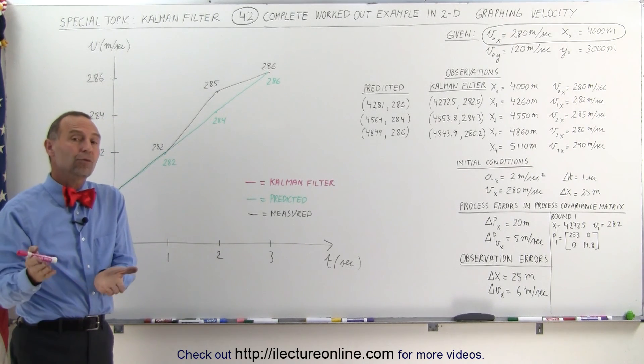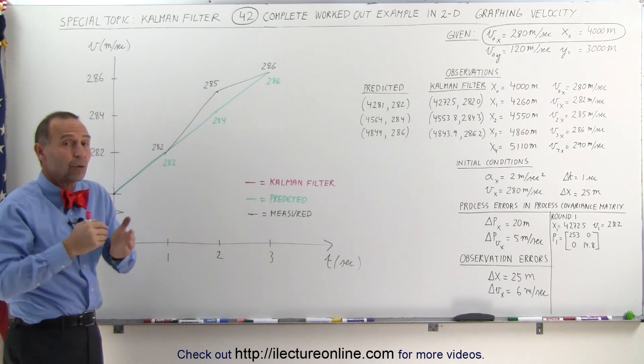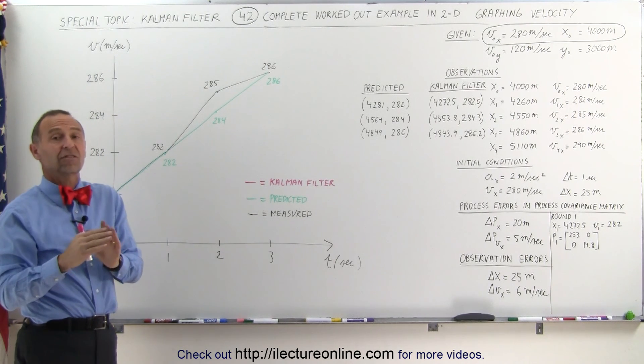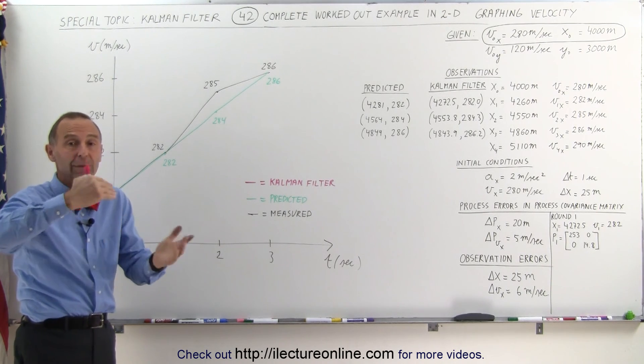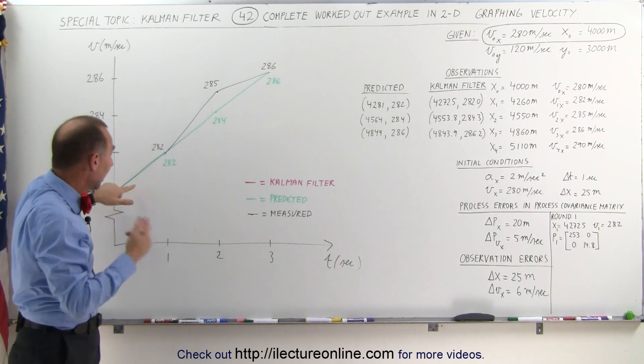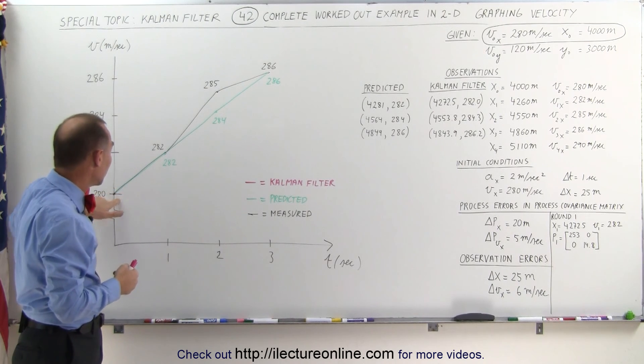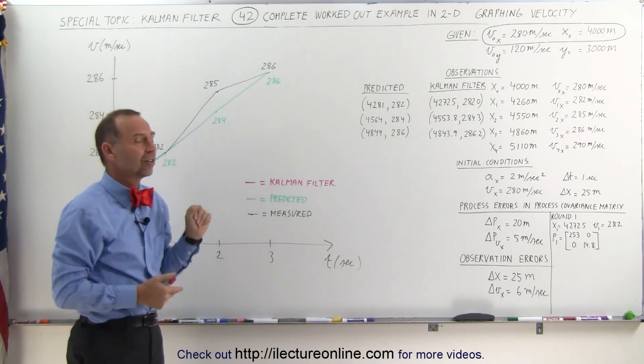To predict the values, we're assuming a constant acceleration of 2 meters per second squared. Of course, that's just a prediction. That's not necessarily correct, as acceleration will change as the plane maneuvers. But at the time, the prediction would be from 280 to 282, 284 and 286.